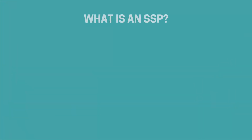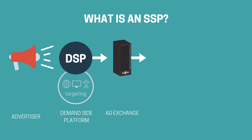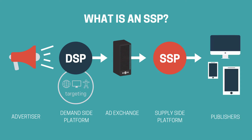Advertisers are buyers, so they use a Demand Side Platform. Basically, they log into their software, pick the inventory they're looking to target — those DSPs are that software. It's hooked up to our SSPs. So really, the SSPs are here to transact on our behalf as publishers.